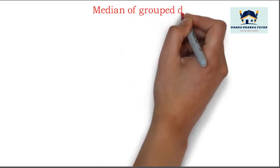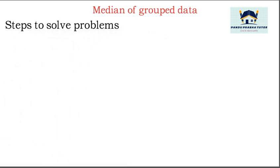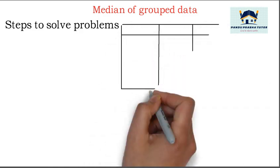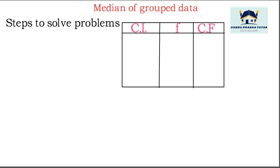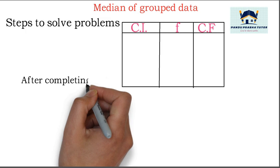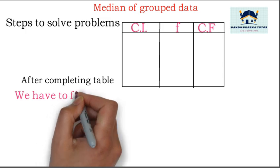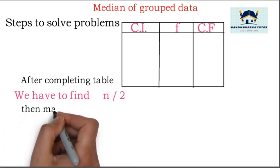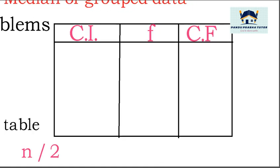Namaste viewers. In this video we will study median of grouped data and the steps to solve problems. First, we have to write a table with class interval and frequency columns given, then find the cumulative frequency as the last column. After completing this table, we have to find n by 2, then mark the class interval where the n by 2 observation lies.